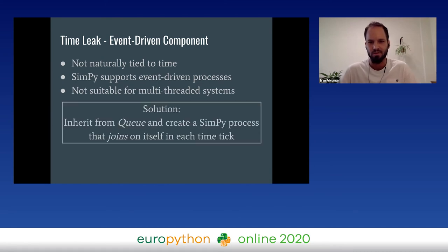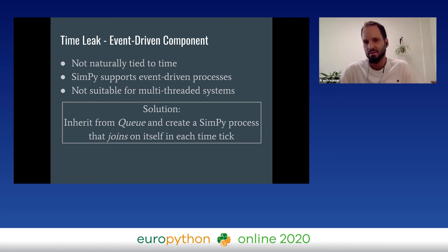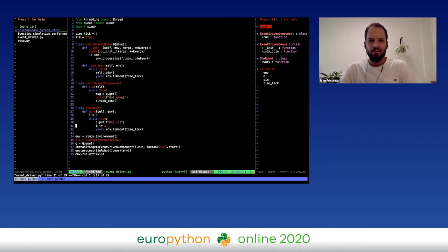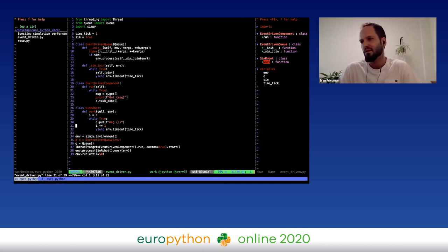In simulation, we create another SimPy process which, in every time tick, holds the time until the event-driven threads have done their work. It does this by calling join on the thread's queue. The join function waits until the queue is empty, ensuring the event-driven thread has time to handle all events. In this code example, we have one event-driven thread listening to a queue and printing messages, and a robot that in every time tick sends a message to that thread.